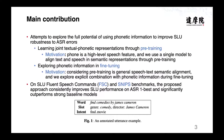Our main contribution is to explore the full potential of using the phoneme information and to improve SLU robustness to ASR errors, including learning the joint text and phone representation throughout pre-training and exploring phone lexical information. Considering the phoneme is a high-level speech feature, we use a single model to align the text and phone in the semantic representations throughout pre-training and explore the combination with the phone information during fine-tuning.